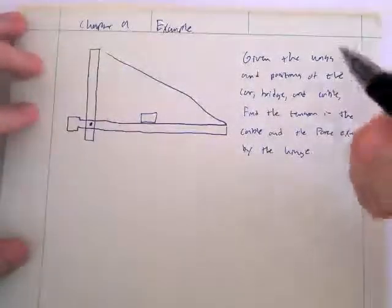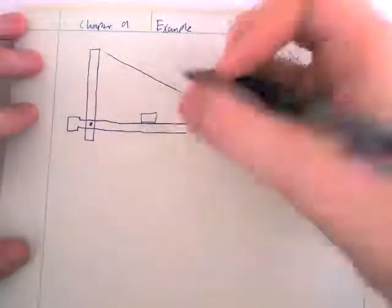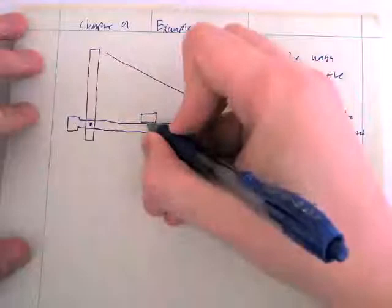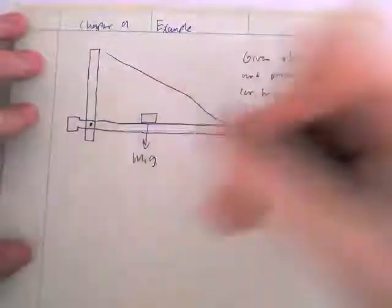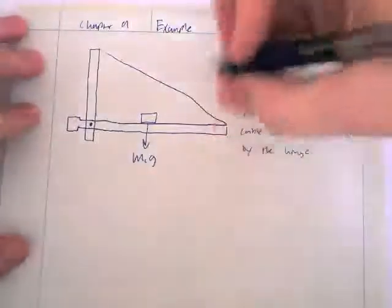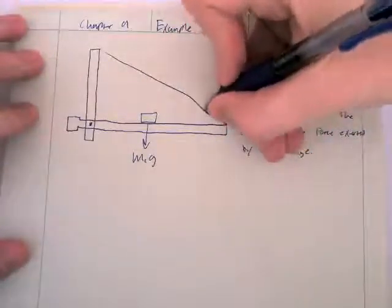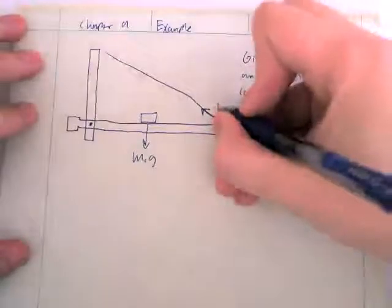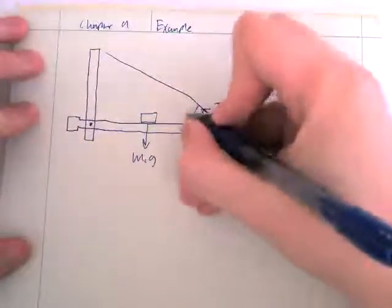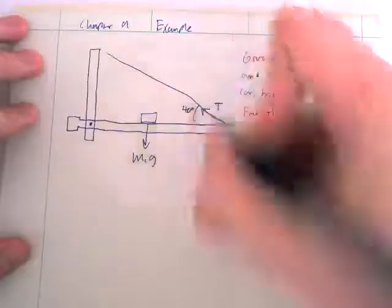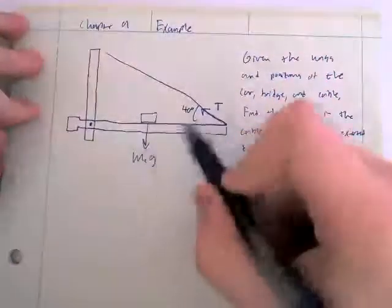The first force we have is the force of this car — it's going to be pulling down on this bridge. So we're going to have some force acting here: the mass of the car times gravity. We also have the tension in this cable. This cable here is acting in this direction with some tension T. We actually do know the angle of this, so I'll fill that in at 40 degrees.